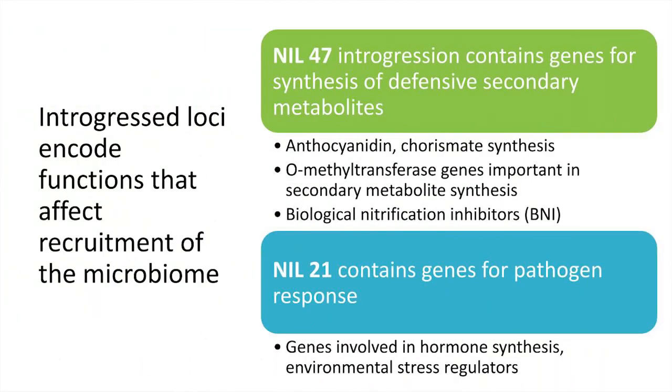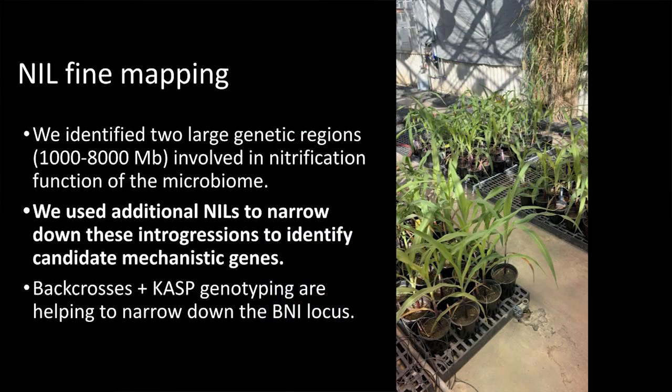Among the teosinte loci, we also found genes previously implicated in microbiome interactions and stress responses, all of which might have something to do with changing how maize interacts with its microbiome. These teosinte introgressions are quite large, containing hundreds of potentially important candidate genes. We're using additional near-isogenic lines to narrow down the introgressions, and carrying out backcrossing and genotyping to narrow down the BNI locus. We can then test the metabolism of these lines to confirm phenotypic changes indicative of nitrification suppression. That work is ongoing.